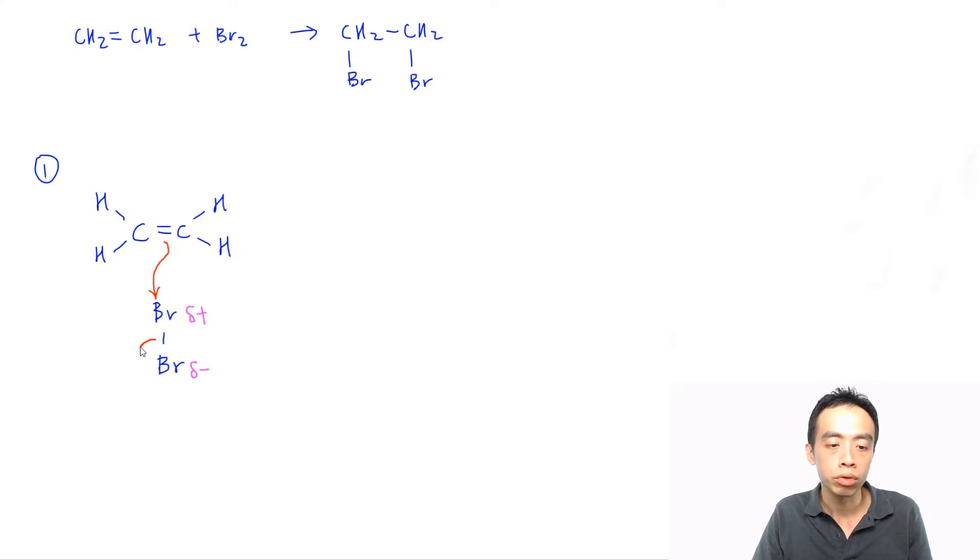Then after that, we will have to show an arrow pointing from my Br, Br bond, and point towards this Br partial minus charge, which means that this bromine-bromine bond will break. Both electrons will go to bromine at the bottom.